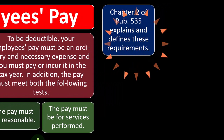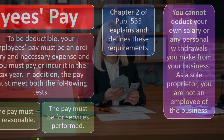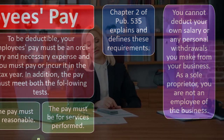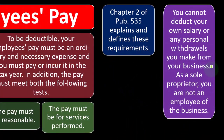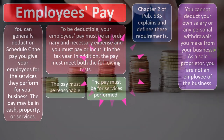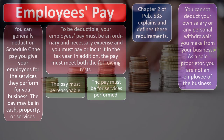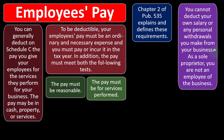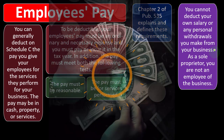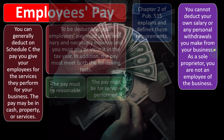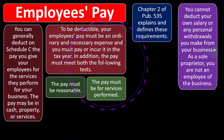You cannot deduct your own salary or any personal withdrawals you make from your business. You might ask: why can't I deduct my own salary? If you deducted your own expense, that would be like issuing yourself a W-2 and paying yourself — it would just be a wash, because you'd pay yourself a W-2 and then record it as income on line one of the 1040. So that's not how it works with a Schedule C. With a Schedule C, you just take the net income as the amount you're paying the taxes on.